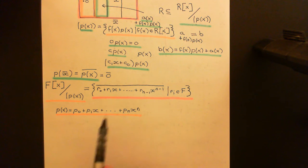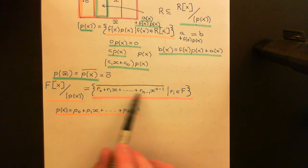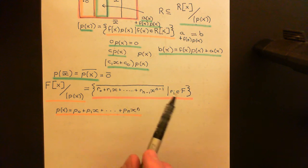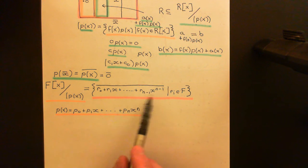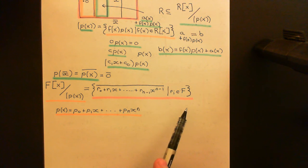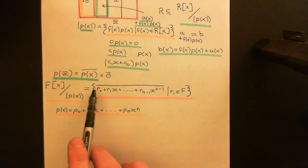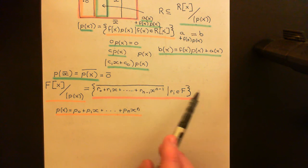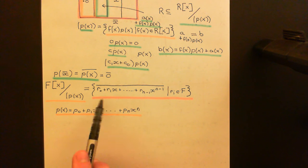You take a representative from one coset and a representative from the other, and add their coefficients component-wise to get the answer for addition. For multiplication, you multiply them in the normal way using distributivity — you'd get something of degree bigger than N potentially — and then you'd work out which coset it was in and reduce it back to a representative of degree strictly less than N.